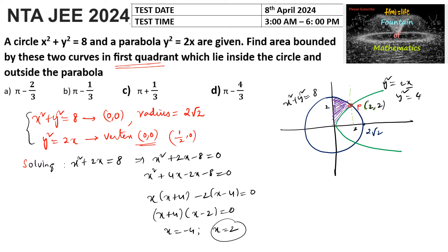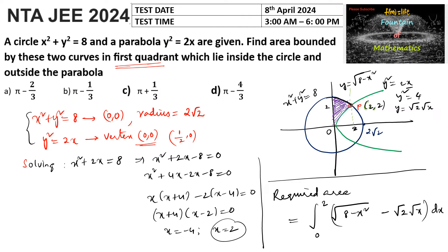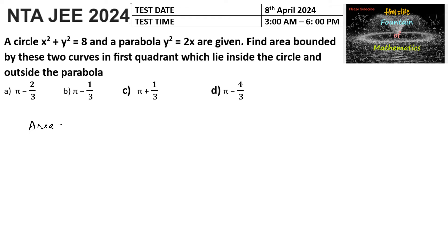From x = 0 to x = 2, the upper curve is y = √(8 - x²) and the lower curve is y = √2 · √x. We can give the required area using integrals: required area = ∫₀² [√(8 - x²) - √2·√x] dx.